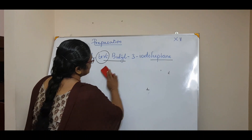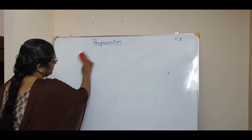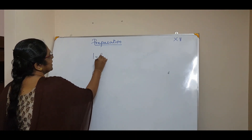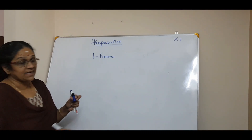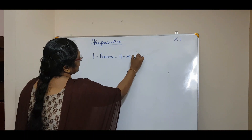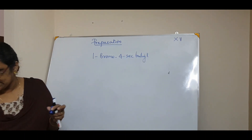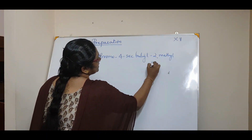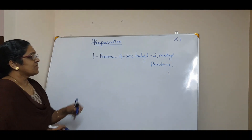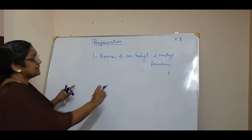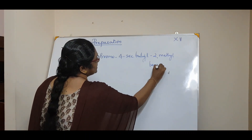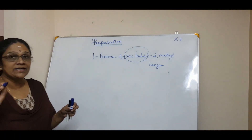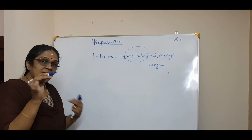Now one more compound to clear confusion, because many have asked about it: 1-bromo-4-secondary-butyl-2-methylbenzene. The confusion is in how you write secondary butyl. You now know tert-butyl means a tertiary carbon atom with a butyl group — now how do you write the secondary butyl group?